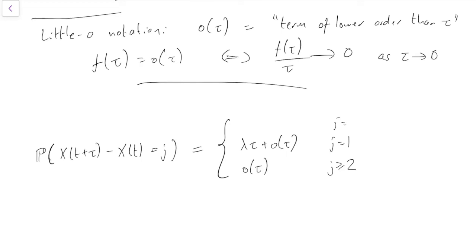And then for j equals 0, well, that's just the rest of the probability, right? 1 minus lambda tau plus o(tau). Remember, of course, that plus little o of tau and minus little o of tau mean the same thing under our little o notation. They both mean something tending to 0. And so the probability that j equals 0 is 1 minus that little bit for the probability that j equals 1.